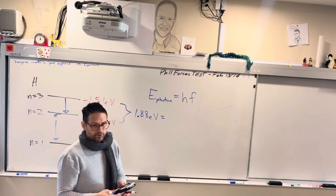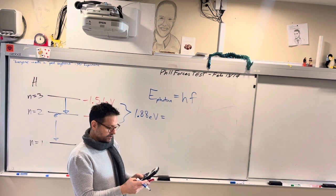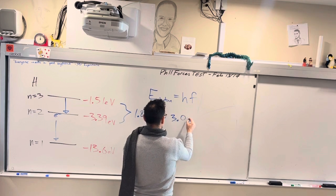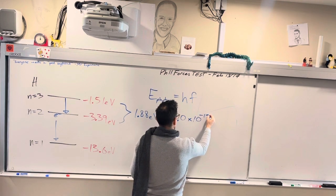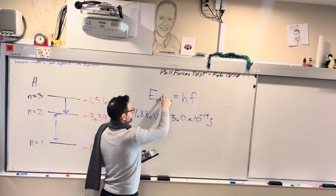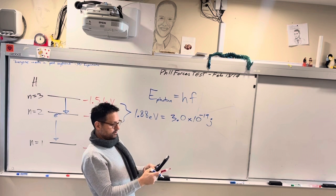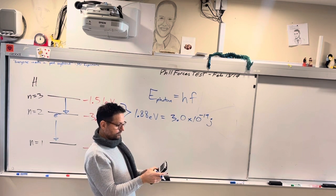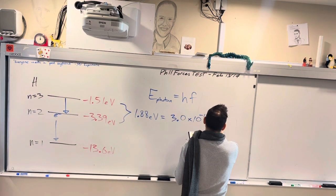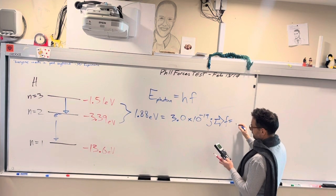What does that equal in joules? We have to times it by 1.6 times 10 to the negative 19 and you get about 3.0 times 10 to the negative 19 joules. Divide that. This is the energy of the photon that would be released so divide that by H and that's going to produce a frequency of 4.5 times 10 to the 14.